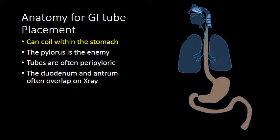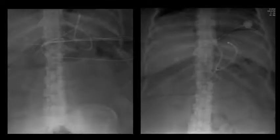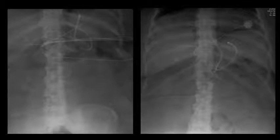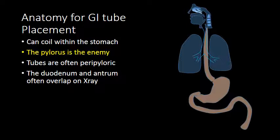When placing a feeding tube, multiple coils can often occur within the stomach, and this can inhibit post-pyloric placement of the catheter. Here are two examples of feeding tubes coiled within the fundus of the stomach. When a coil forms in the fundus, you lose the forward tension that the guide wire can provide and the catheter will often not pass post-pyloric. The pylorus is often the enemy for placement of feeding catheters into the small bowel — at times the pylorus is either redundant or not receptive to the catheter. Tubes are often described as peripyloric on abdominal radiographs because the duodenum and antrum overlap on a single frontal projection, making precise localization of the tip impossible with a single frontal radiograph.